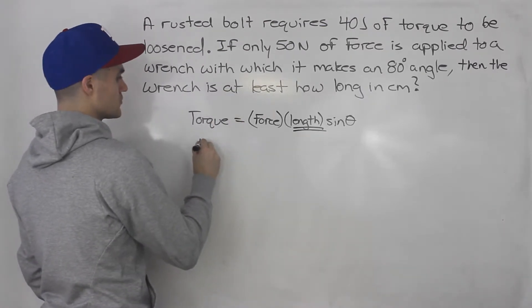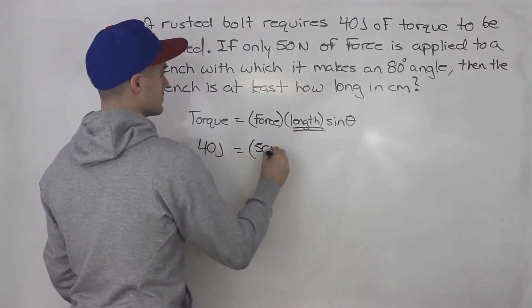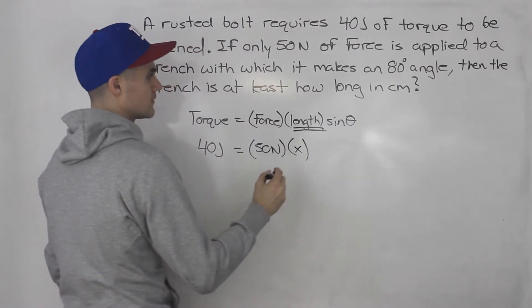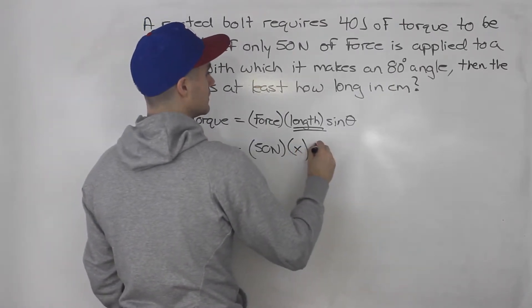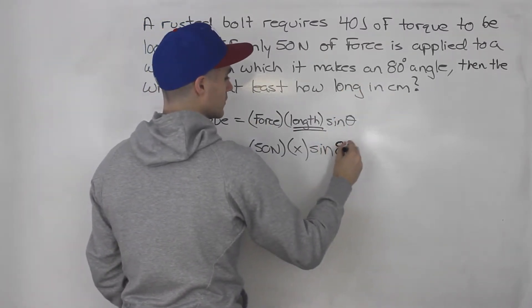So the torque is 40 joules, the force is 50 newtons, the length we're solving for - let's just put an x here, an x variable. And then we got sine of the angle. The wrench makes an 80 degree angle.